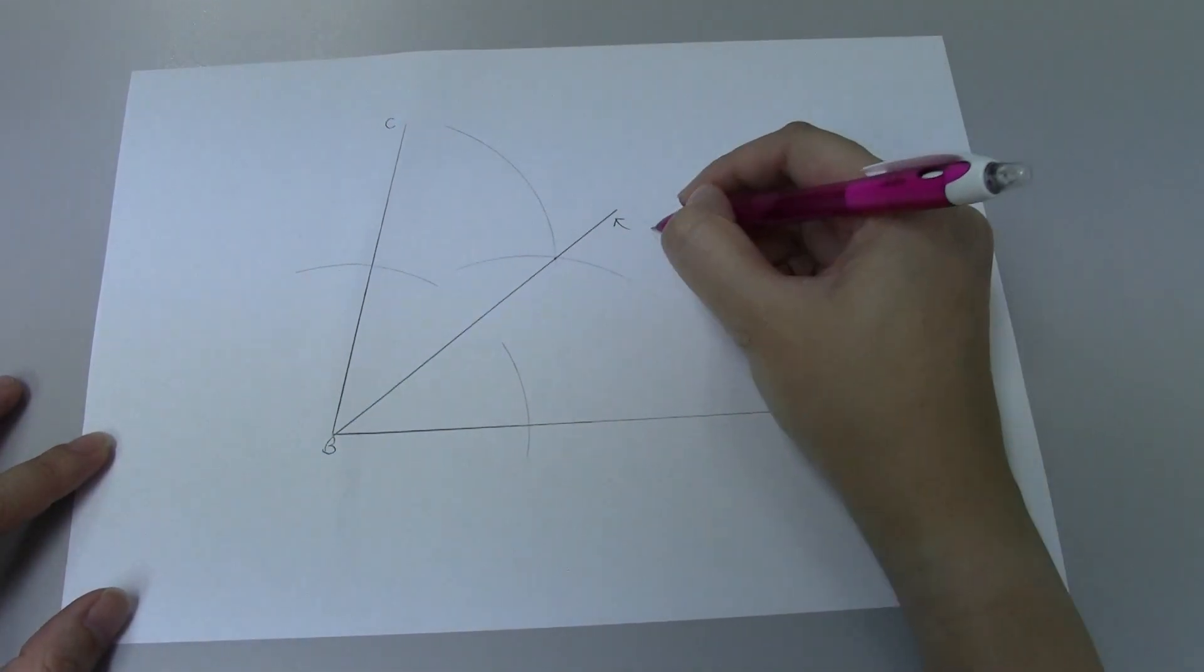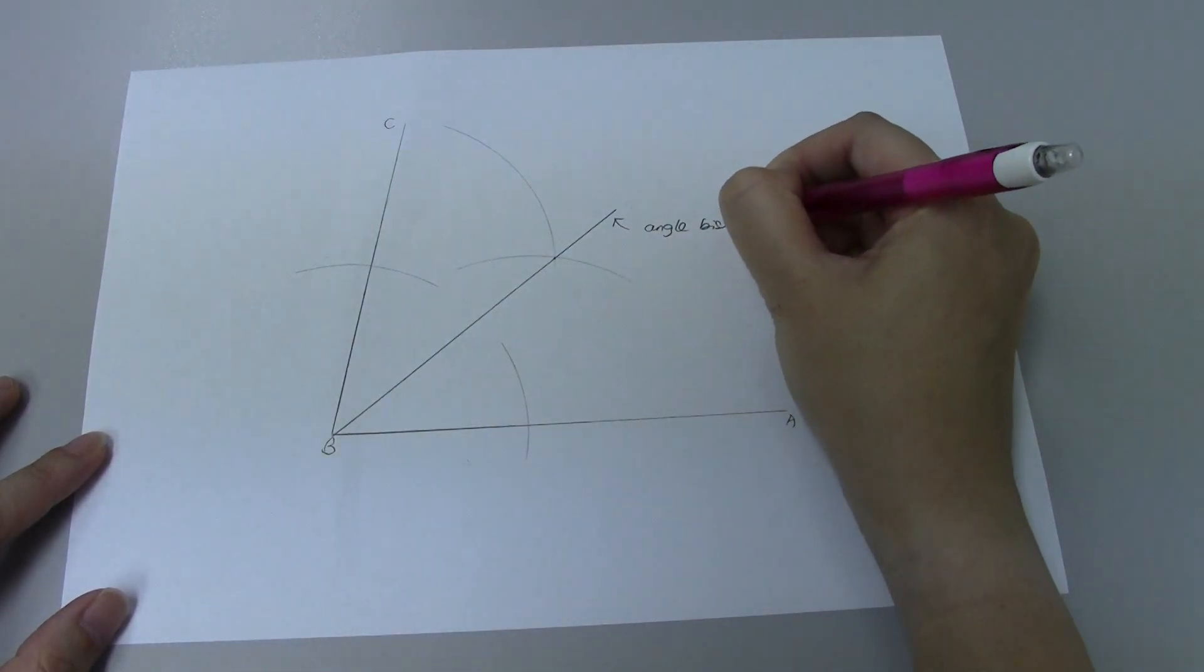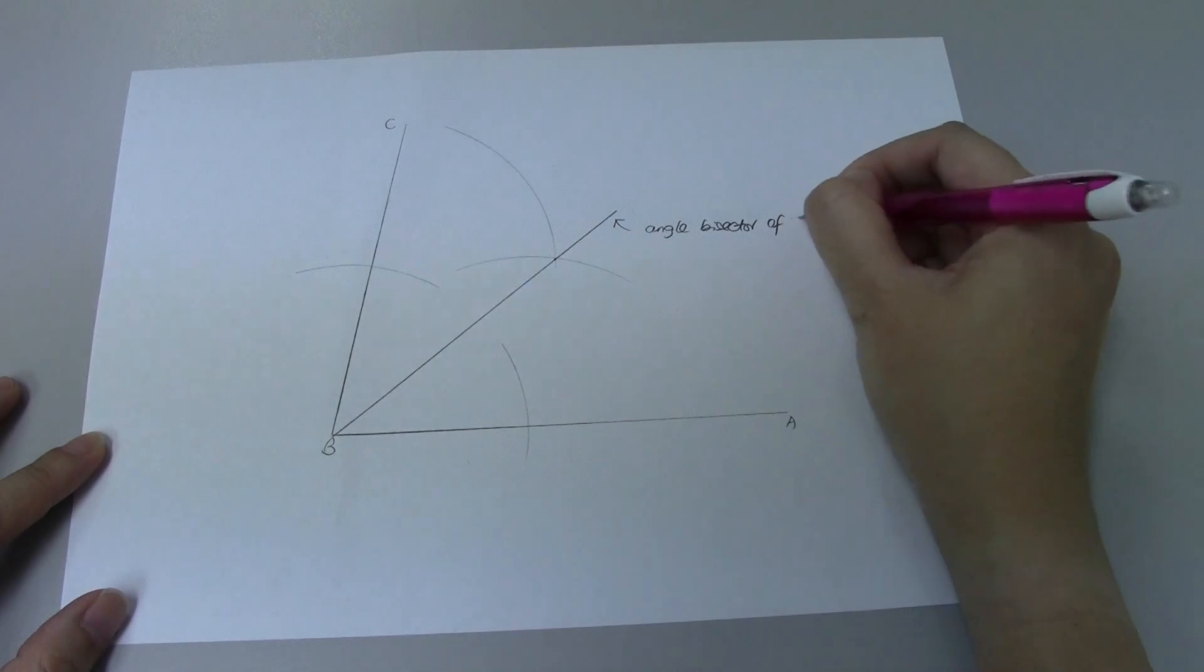This line here is what we call the angle bisector of ABC.